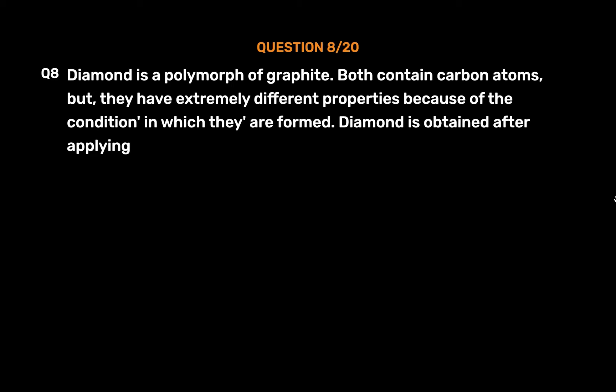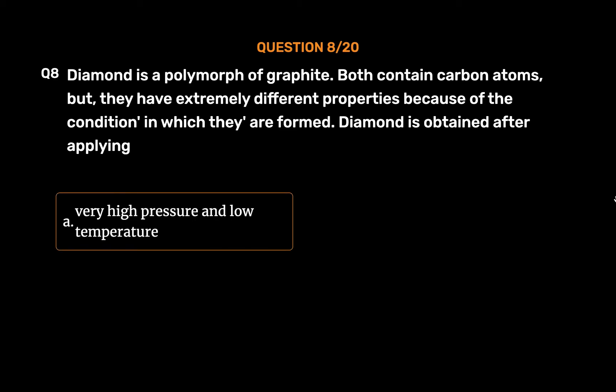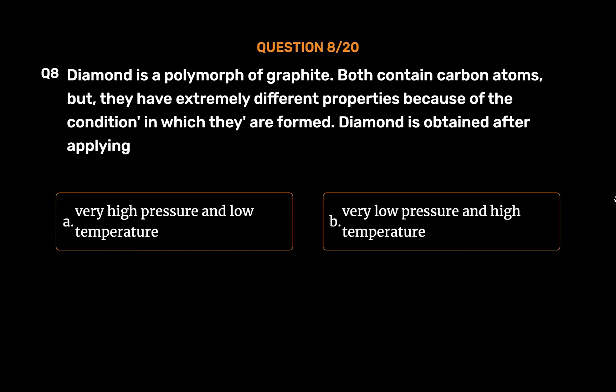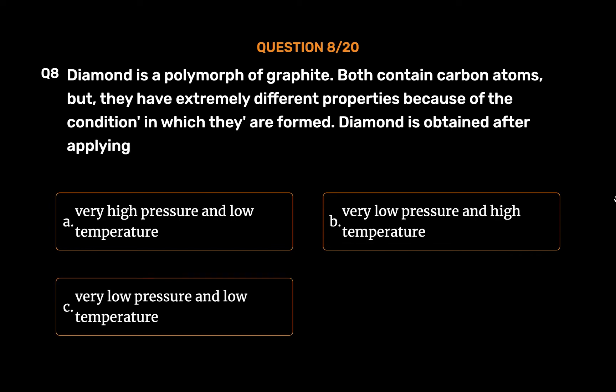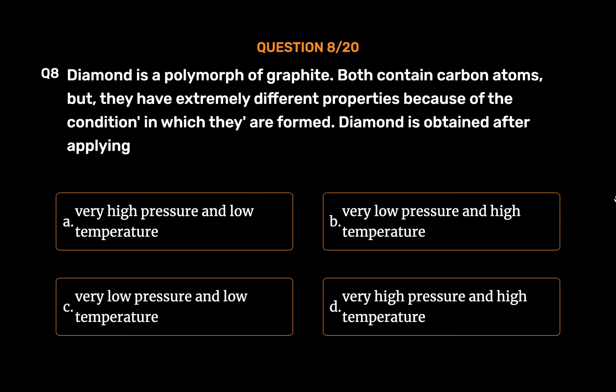Question No. 8: Diamond is a polymorph of graphite. Both contain carbon atoms, but they have extremely different properties because of the conditions in which they are formed. Diamond is obtained after applying: Option A, Very high pressure and low temperature; Option B, Very low pressure and high temperature; Option C, Very low pressure and low temperature; Option D, Very high pressure and high temperature. The correct answer is Option D, Very high pressure and high temperature.